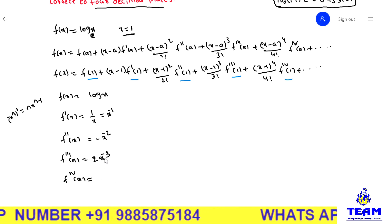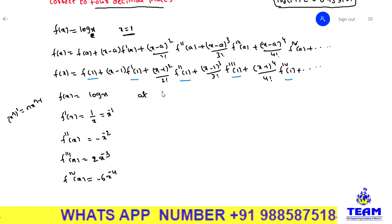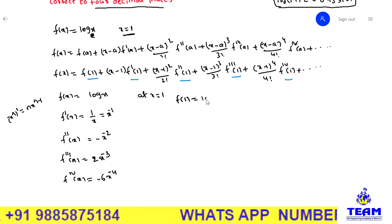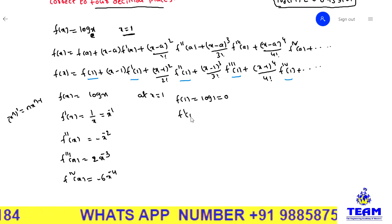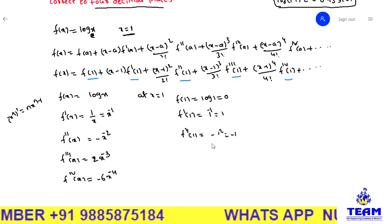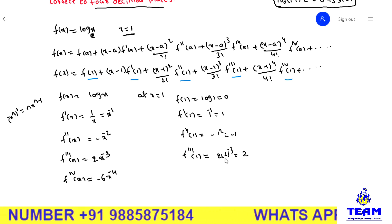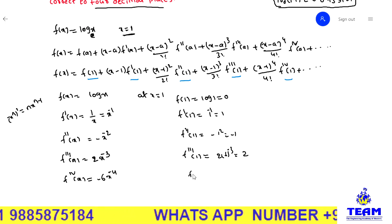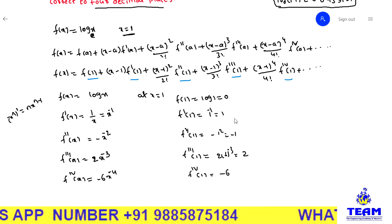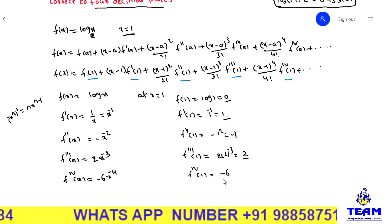The fourth derivative f''''(x): here we have 2 and −3, so −6·x⁻⁴. Now evaluating at x = 1: f(1) = log(1) = 0. f'(1) = 1⁻¹ = 1. f''(1) = −1² = −1. f'''(1) = 2·(1⁻³) = 2. f''''(1) = −6·(1⁻⁴) = −6. So the final values are: f(1) = 0, f'(1) = 1, f''(1) = −1, f'''(1) = 2, f''''(1) = −6.